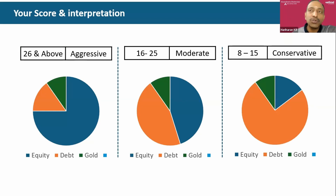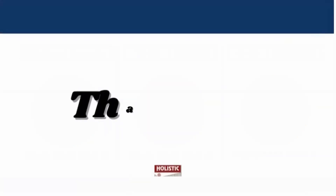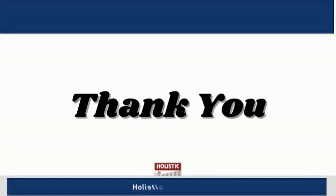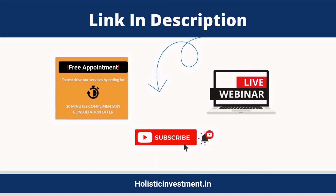Many times we find that people call themselves aggressive investors but majority of their money is lying in fixed deposits. Just to give you some numbers — only 4% of investors actually invest in mutual funds. And even if we assume 90% of that money is in equities, we are talking of about 3.5 crore people in India who are actually investing in equities through mutual funds.